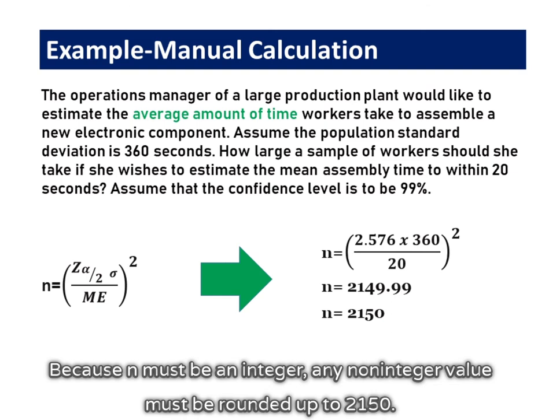Because n must be an integer, any non-integer value must be rounded up to 2150.